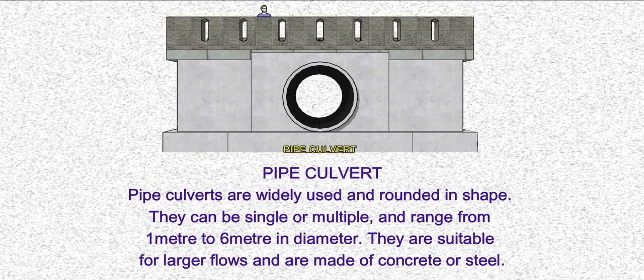Pipe culvert. Pipe culverts are widely used and rounded in shape. They can be single or multiple, and range from 1 meter to 6 meters in diameter. They are suitable for larger flows and are made of concrete or steel.